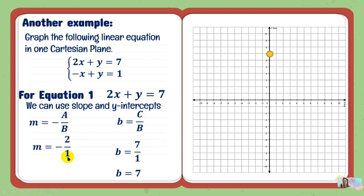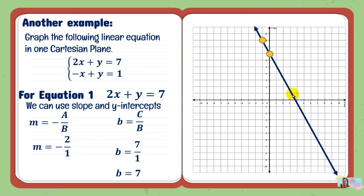Using the slope negative 2 over 1 — rise over run — we have 2 units upward and then 1 unit to the left since the slope is negative. We plot the second point at negative 1 and positive 9. Then we draw the straight line passing through the two points, using a ruler and extending the line across the Cartesian plane. The graph clearly shows the slope is 2 over 1: 2 units upward and 1 unit to the left at any exact point on the line.